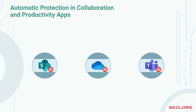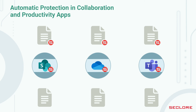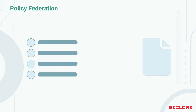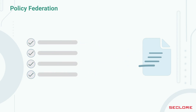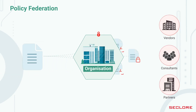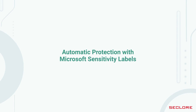Add automatic protection to sensitive document repositories across SharePoint, OneDrive, and Teams. Policy federation: Seclore uses the permissions defined in Microsoft 365 and dynamically applies them to secure the documents even after the document is sent out of the organization. Automatic protection with Microsoft sensitivity labels.